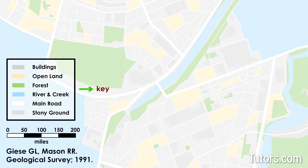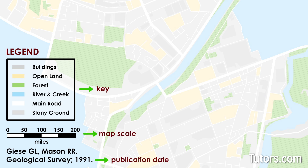The key explains the symbols, while the legend holds the key and other information such as map scale, map publication date, cartographer, map maker, or company name.